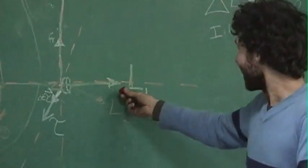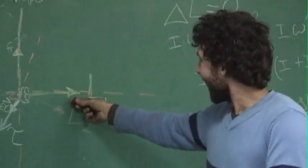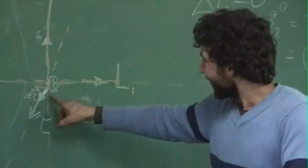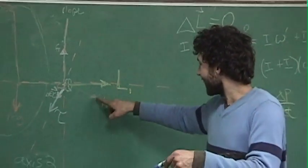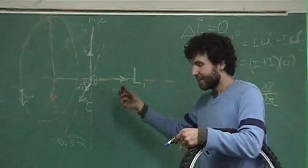Yeah, impulse. That's going to be represented by this little vector — it'll be the thing we add to this to get this.